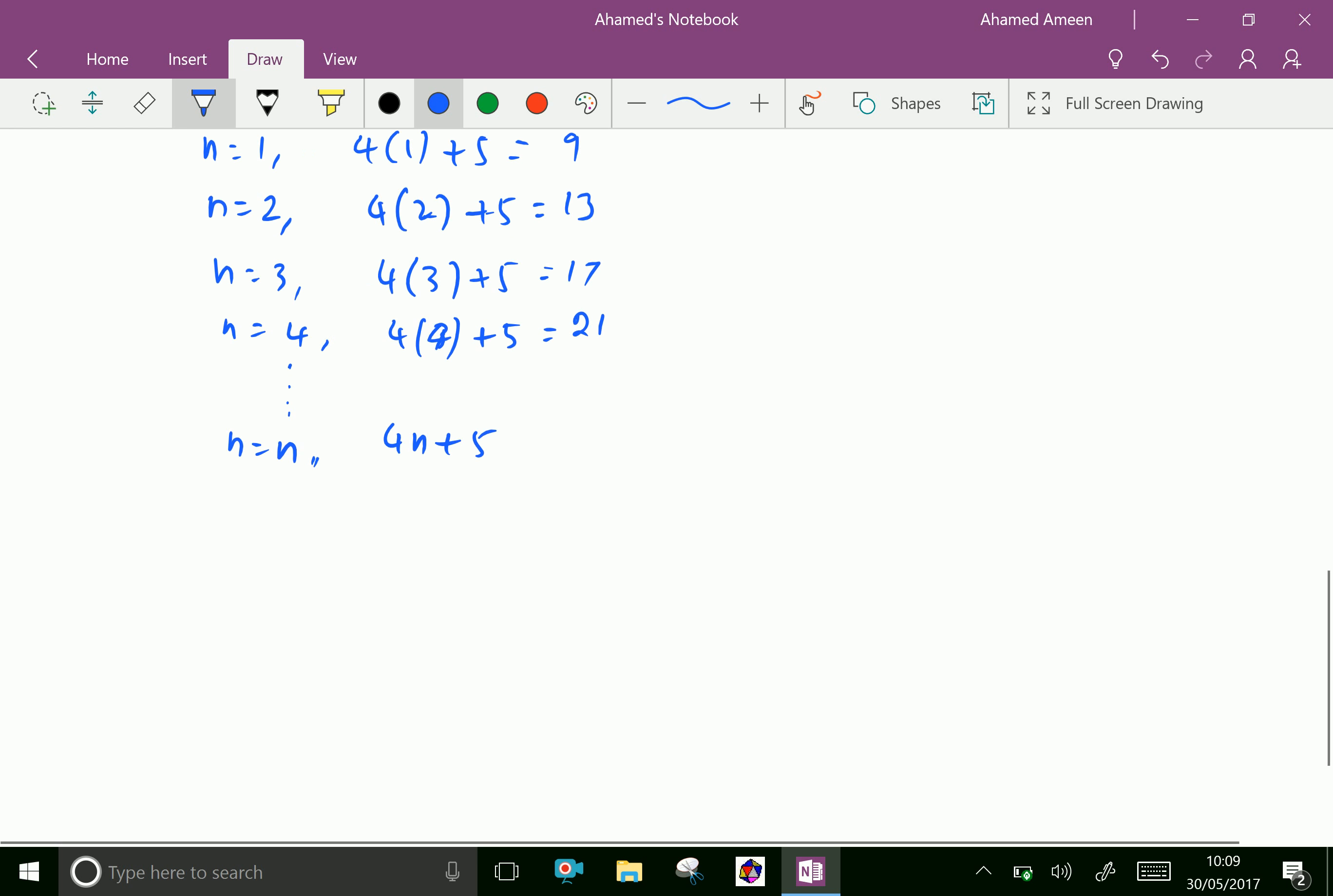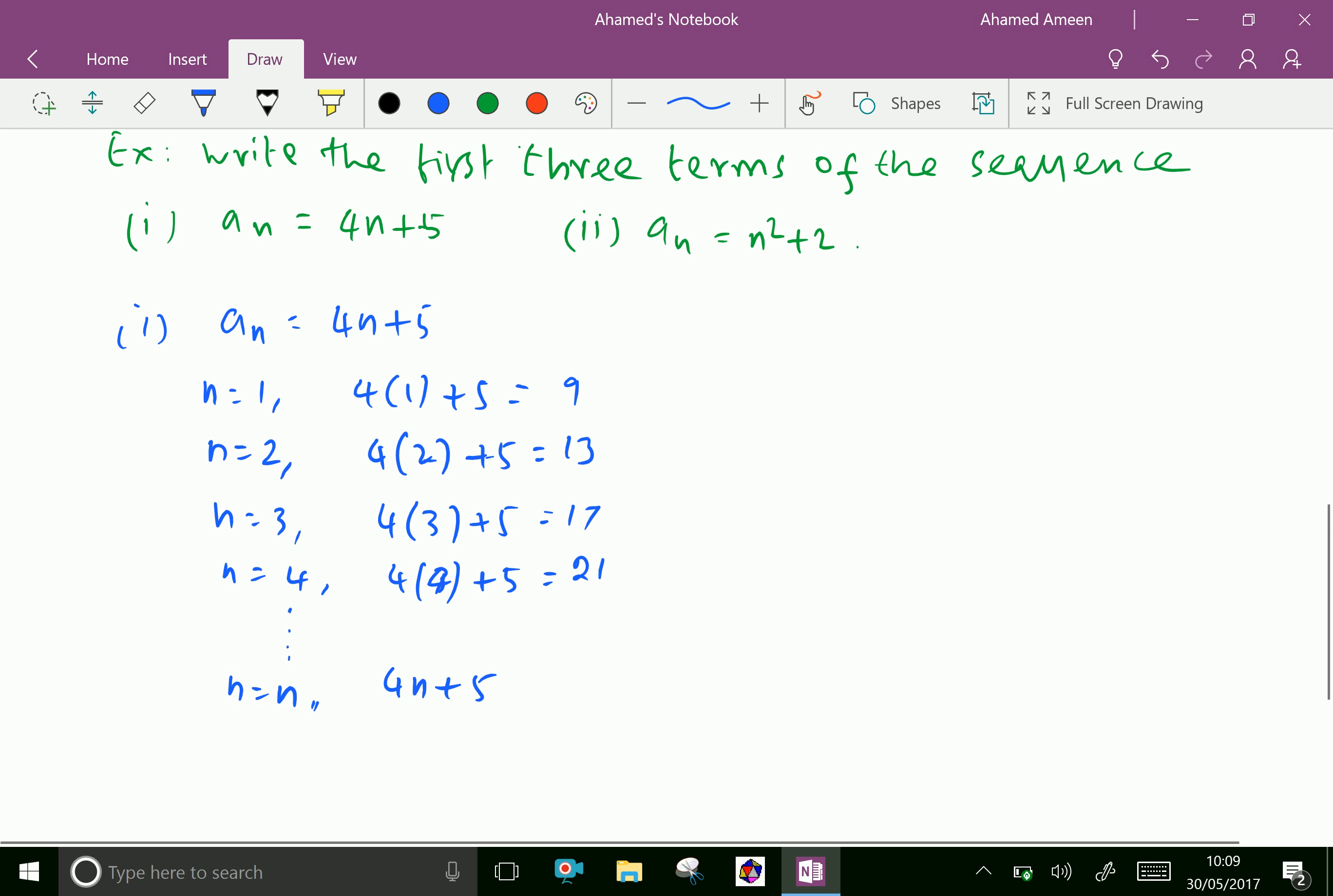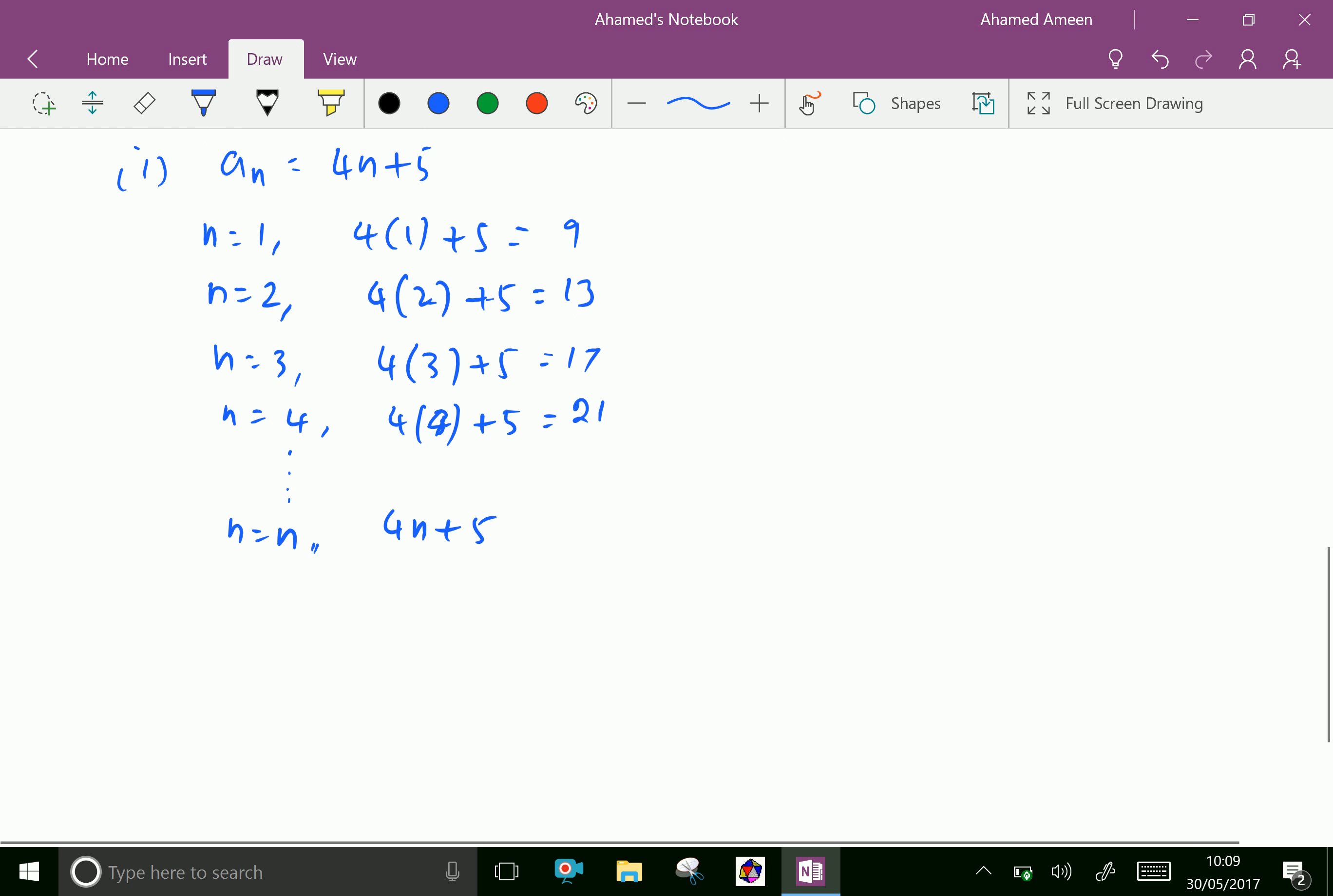Therefore, we can write this. Write the sequence is 9, 13, 17, 21, dot dot dot, 4n plus 5.